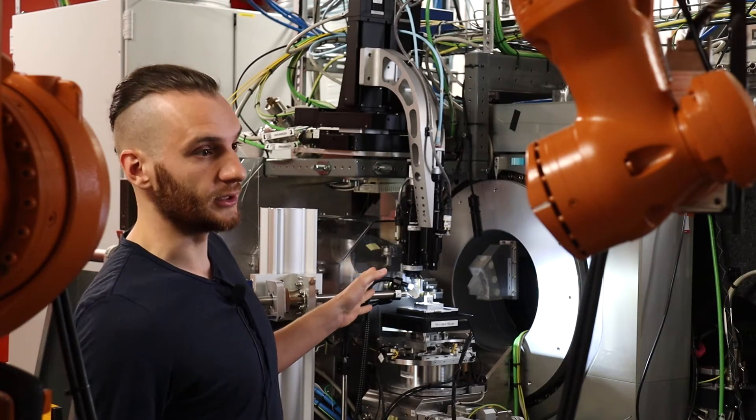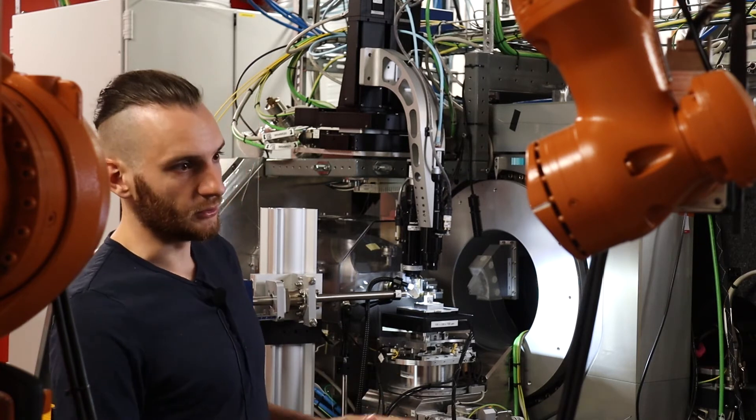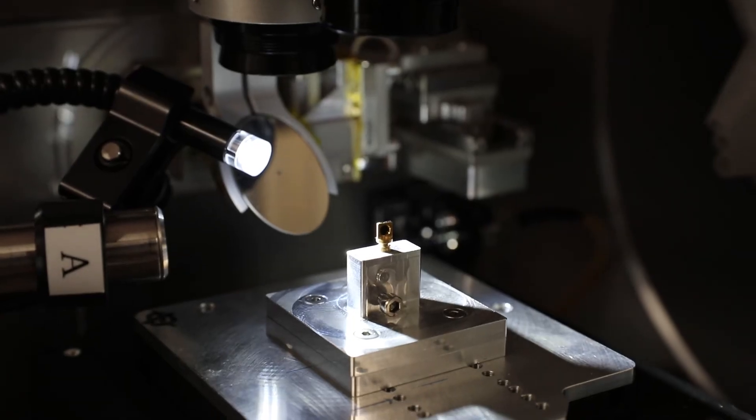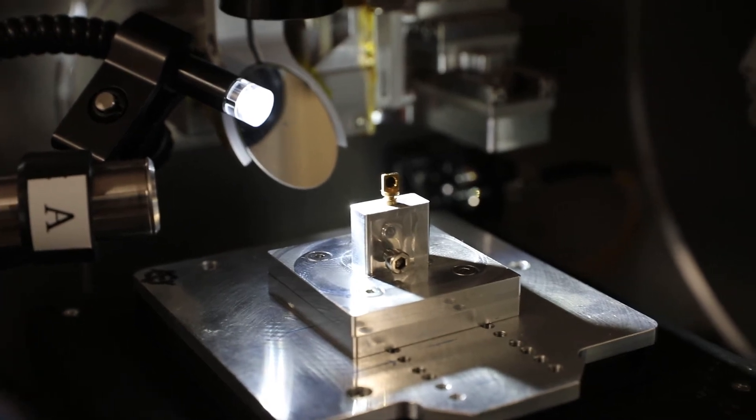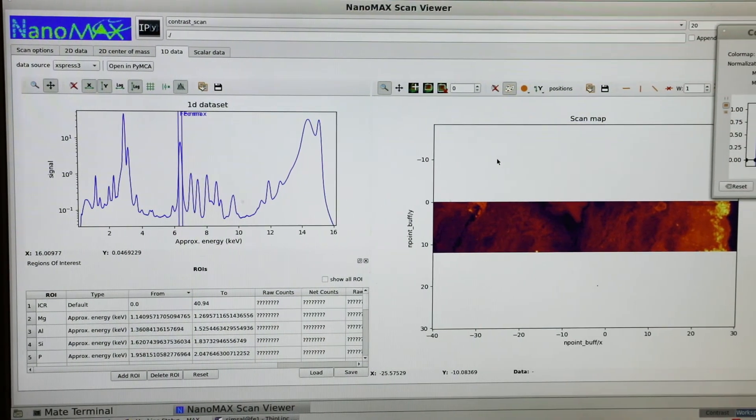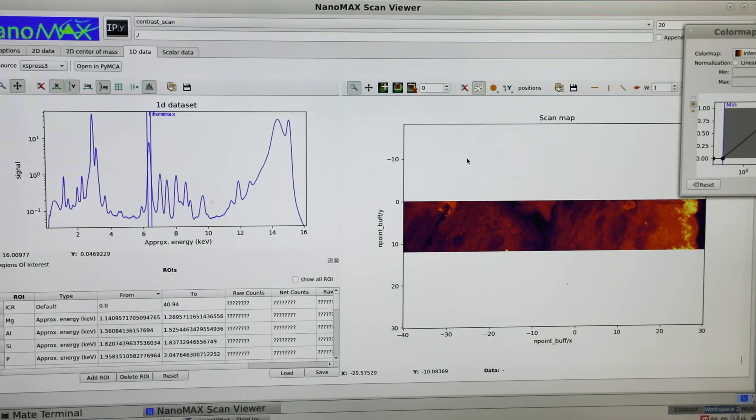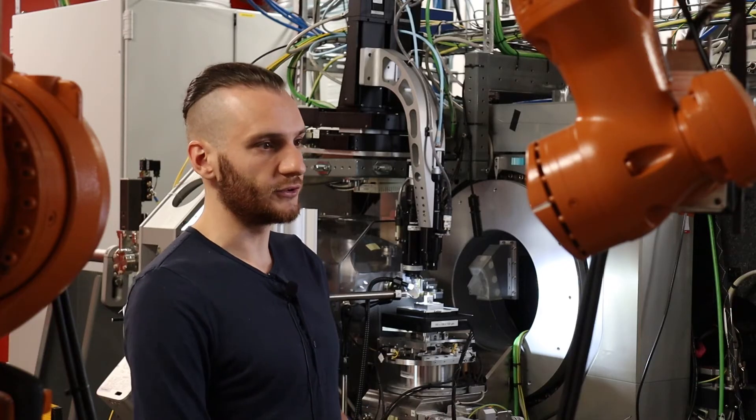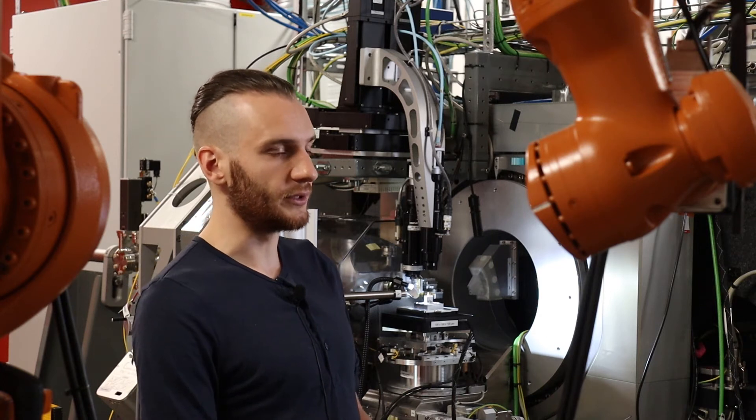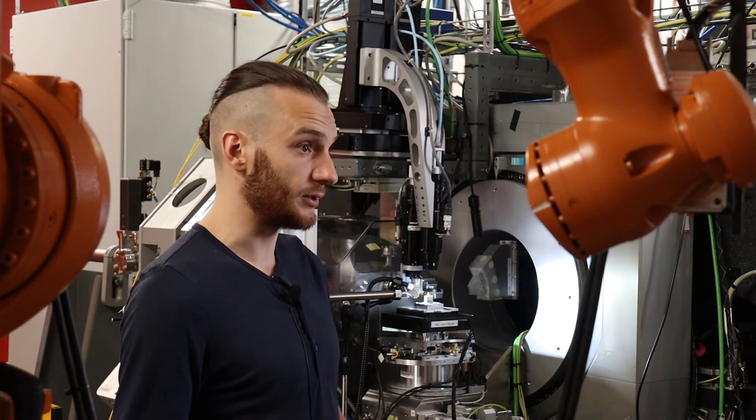And then we have a fluorescence detector which is sitting as close as possible to the sample. The whole setup is in air, which means that we're able to record a fluorescence signal from elements with atomic number from 15 above, that is to say, from phosphorus upwards all the way through the K or L edges of transition metals.